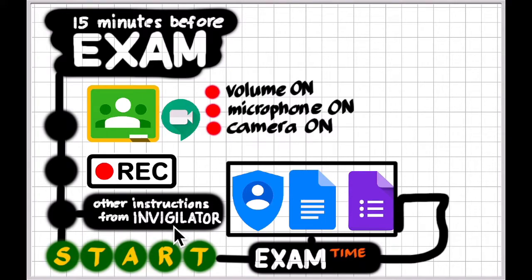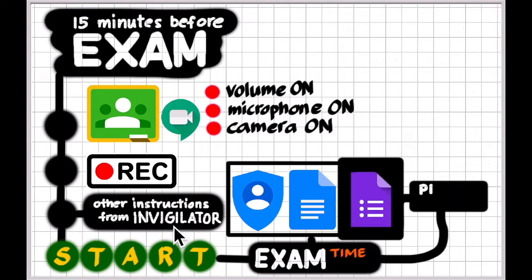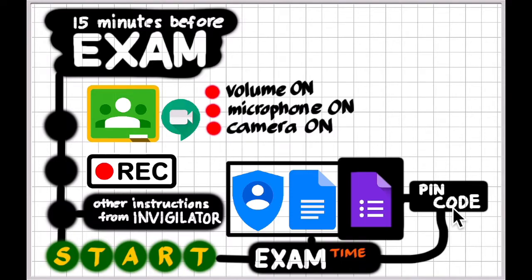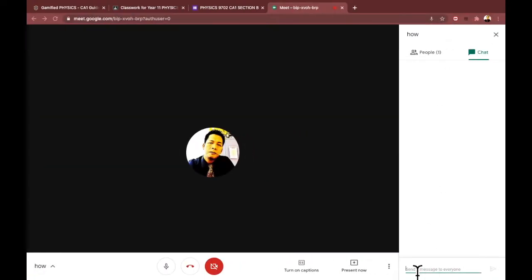For the form, when you are about to click the submit button after answering all the questions, you will be asked for a pin or a code. Ask that from the invigilator, not by talking to him or her but using the chat panel of the Google Meet. Go to the tab with the Google Meet, click this icon for the chat and message the invigilator.